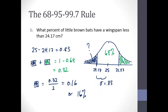A similar but trickier question: what percent of little brown bats have a wingspan less than 24.17? We can figure out that 24.17 is one standard deviation below the mean. Using the rule, the middle 68% means each tail outside is half of the remaining area, or about 16%. So about 16% of bats have a wingspan less than 24.17. That's all review — I just wanted to refresh what we're doing.